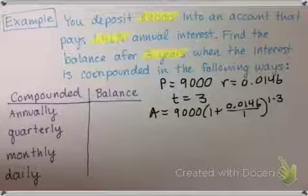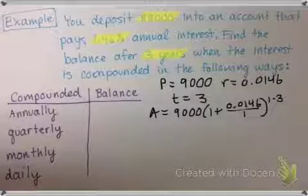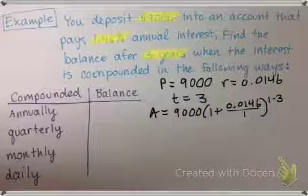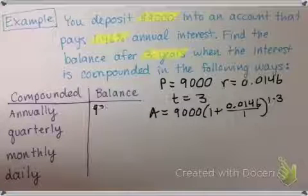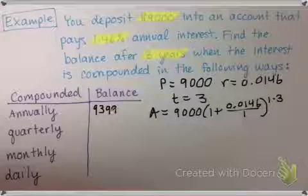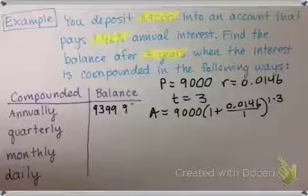Now if you plug that into your calculator, you need to make sure to be very careful with your use of parentheses. You should get $9,399.98.